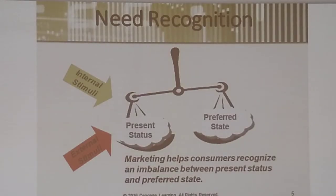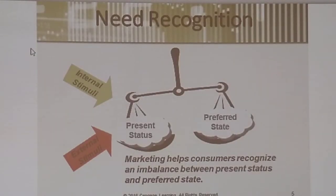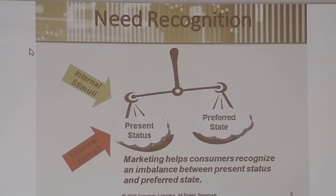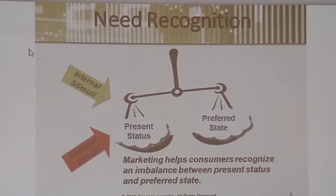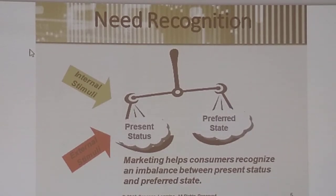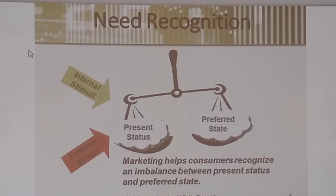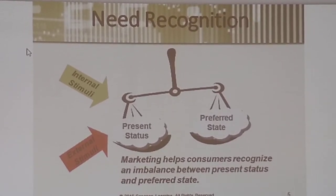The number one stage says problem recognition, but I like to call it more of a needs recognition — it's just recognizing that you have a need. It could be as simple as, we're making pasta tonight, can you go to the store and get some spaghetti? Or, I'm thirsty, I'd like a root beer. Or it could be as complex as, my car is getting old and I need a new car. Some things are simple, some things take a little bit more thought process.